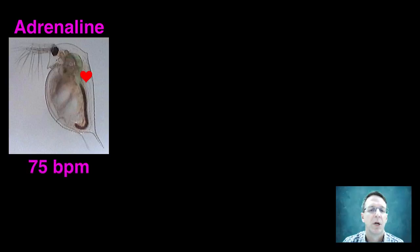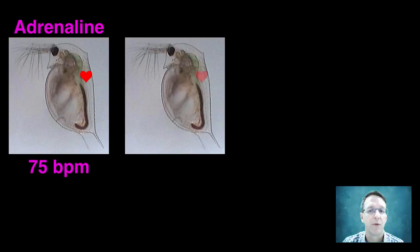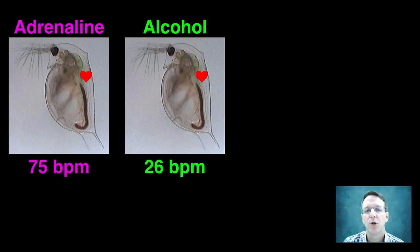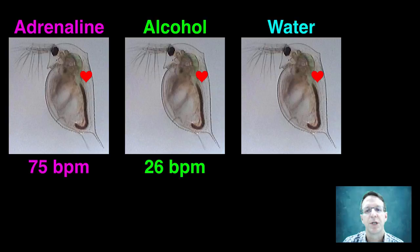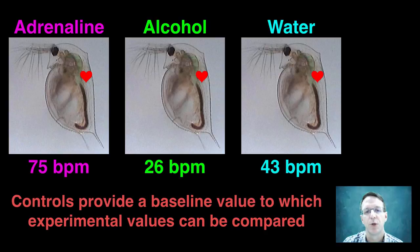Another somewhat similar benefit of running controls can be seen in the following experiment. If you treat a water flea with a solution of adrenaline, its heartbeat can be clocked at about 75 beats per minute. If you try again with another water flea, but this time flooded with a solution of alcohol, the heartbeat is about 26 beats per minute. But it's not until you run a control with just water that you see and can state definitively that adrenaline increases the heart rate and alcohol decreases it. So controls provide us with a baseline value to which we can compare multiple changes of the independent variable.